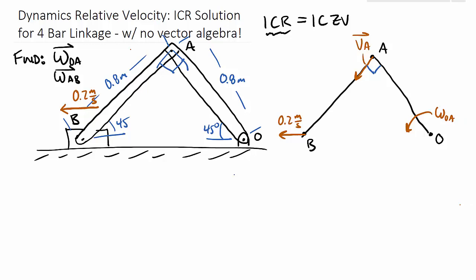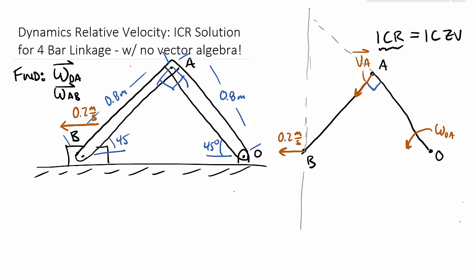And then the last step that we could do is we could locate this instantaneous center of rotation. And so we know that these ICRs are located perpendicular to the velocity vectors of a body. And so perpendicular to the velocity vector would mean we're somewhere on this line here, and also somewhere along this line, somewhere in there. So we end up with our instantaneous center of rotation of body AB being right up there at the top of the screen.